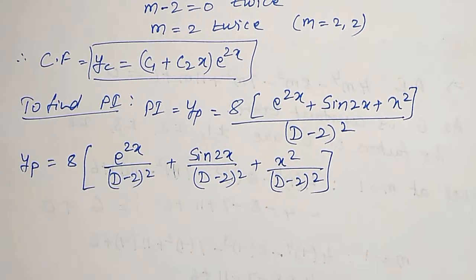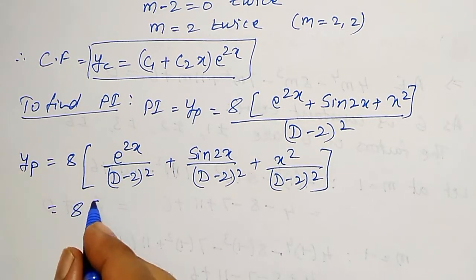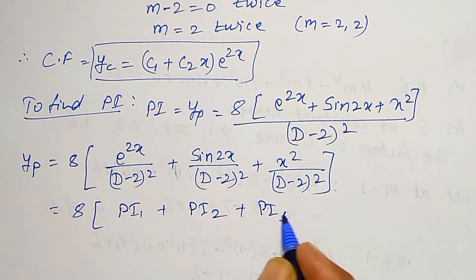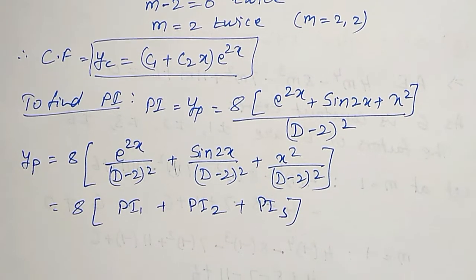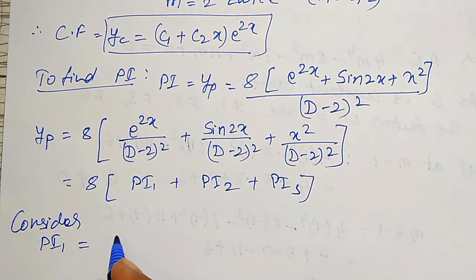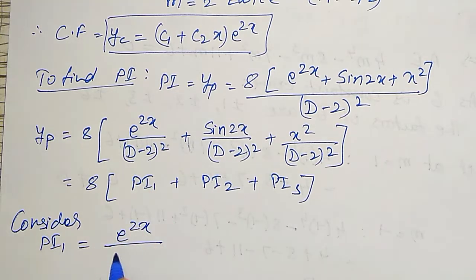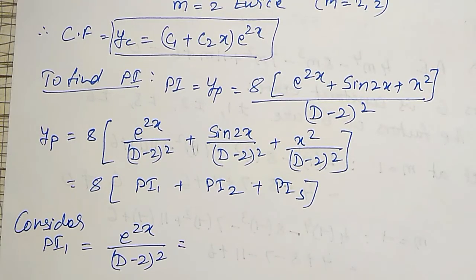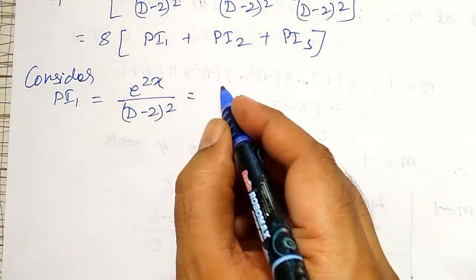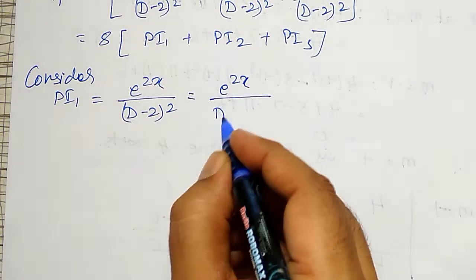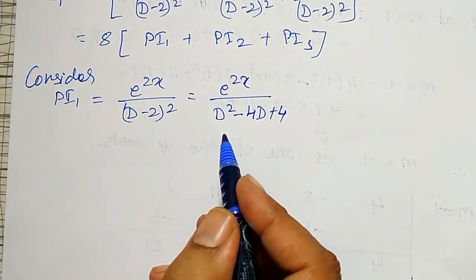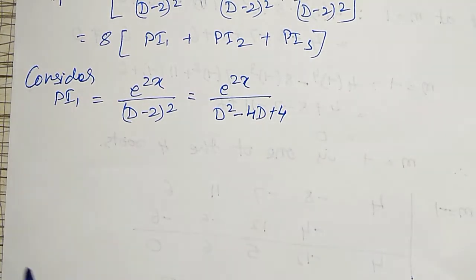Now consider PI1 equal to e to the power 2x divided by (D minus 2) the whole square. For simplicity, let me expand the denominator: e to the power 2x divided by (D squared minus 4D plus 4). It is of type 1, therefore D must be replaced by 2. That is, PI1 equal to e to the power 2x divided by (4 minus 8 plus 4), which gives e to the power 2x divided by 0. Therefore, this is not the PI, because denominator is becoming 0.